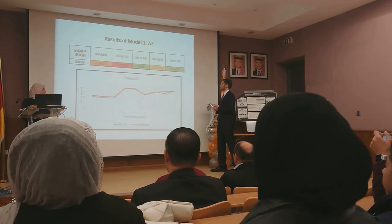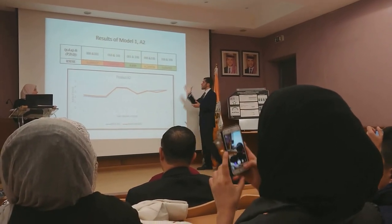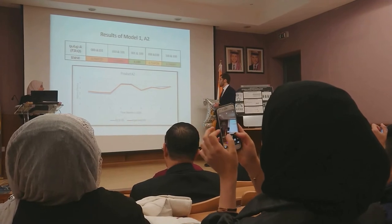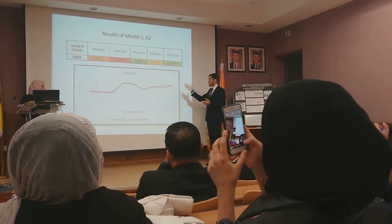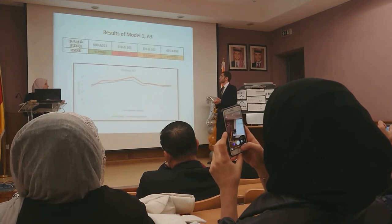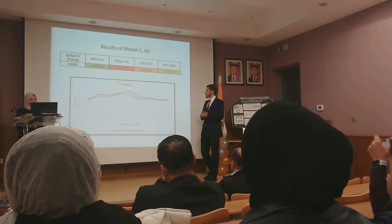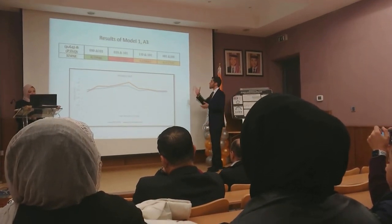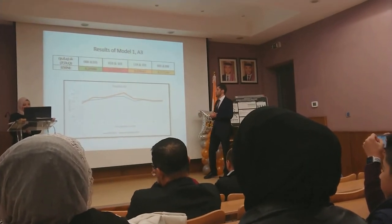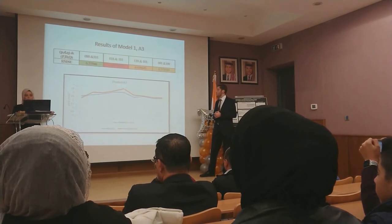Another example is product A2, using the same concept. The best performing forecast shown in green is quite good. For the final Company A product, ARIMA was again able to capture the general trend, despite some inaccuracies.